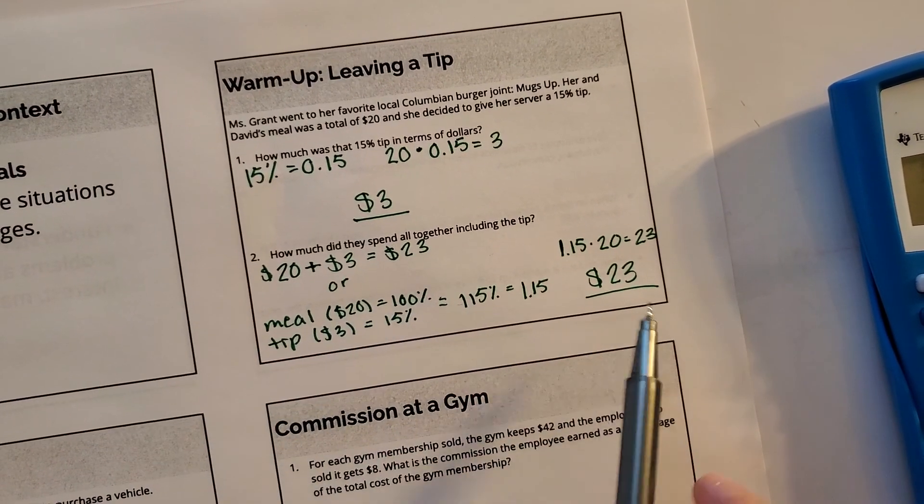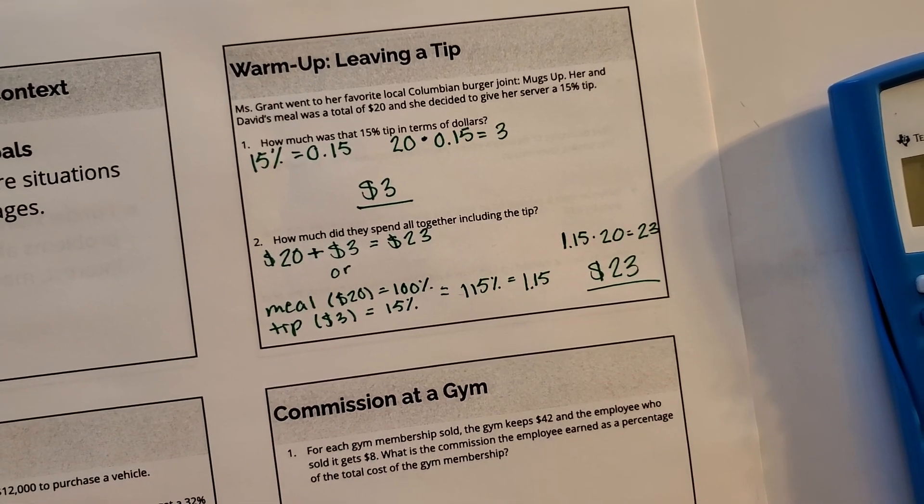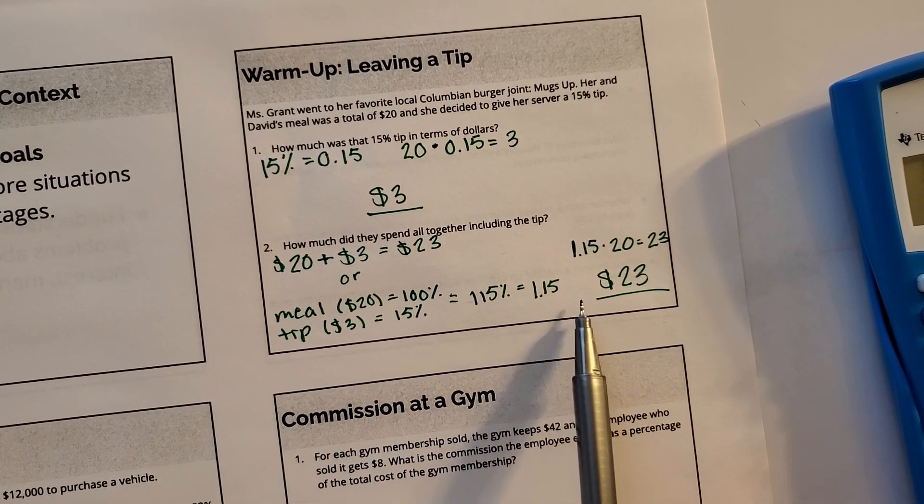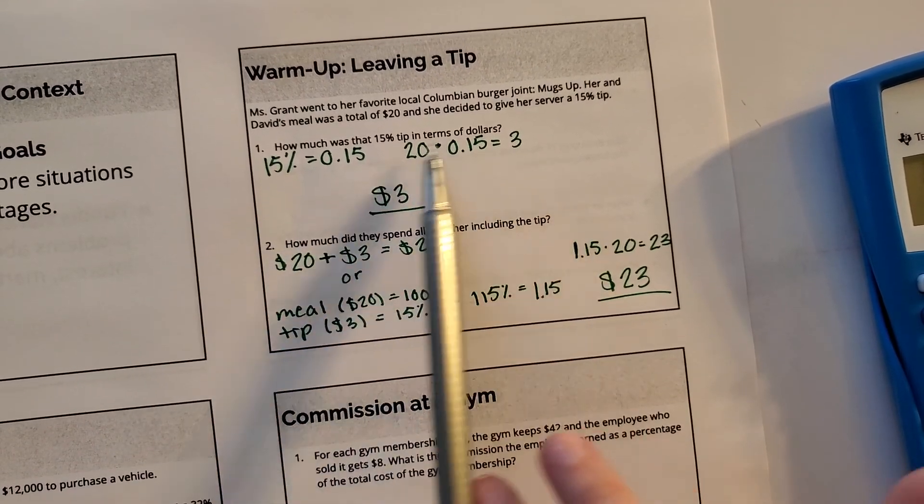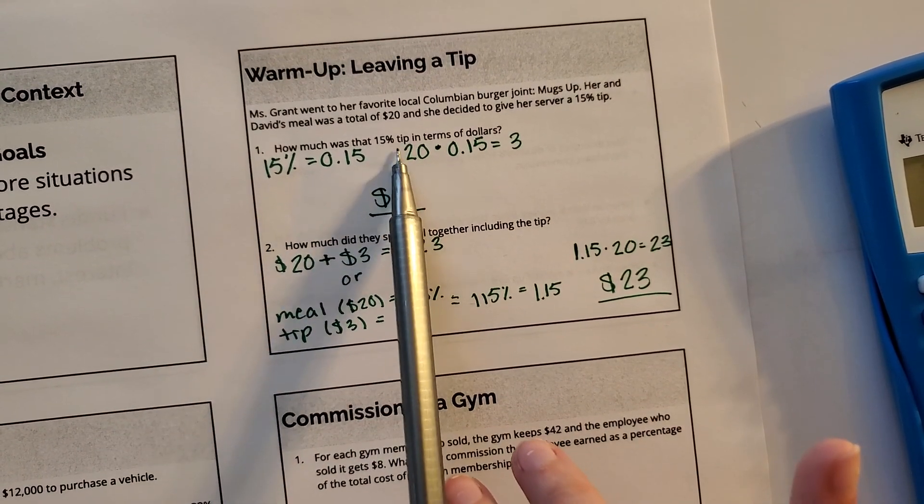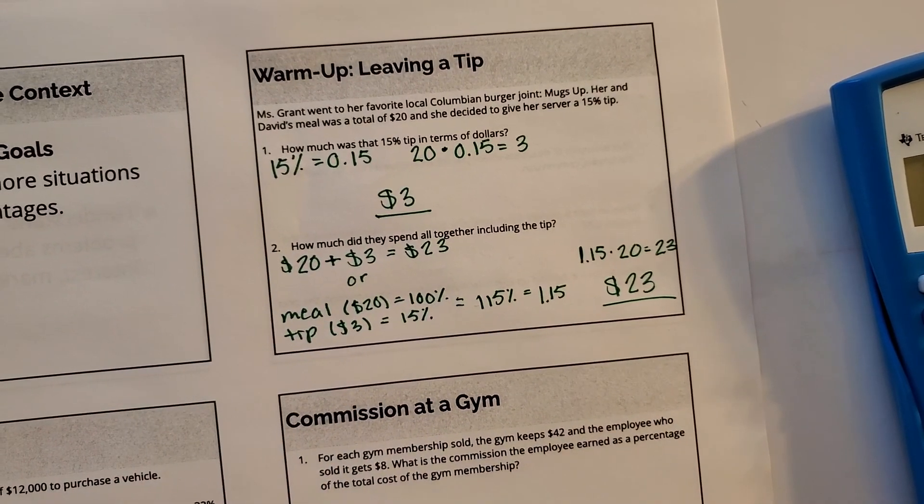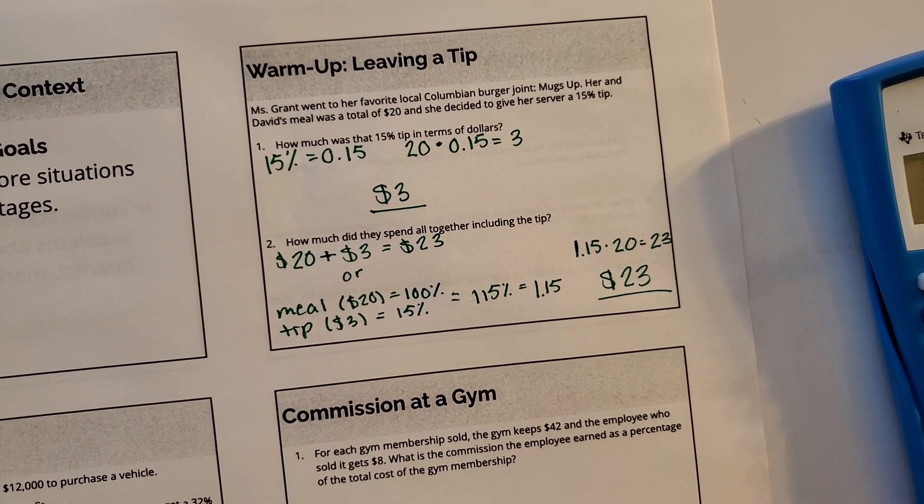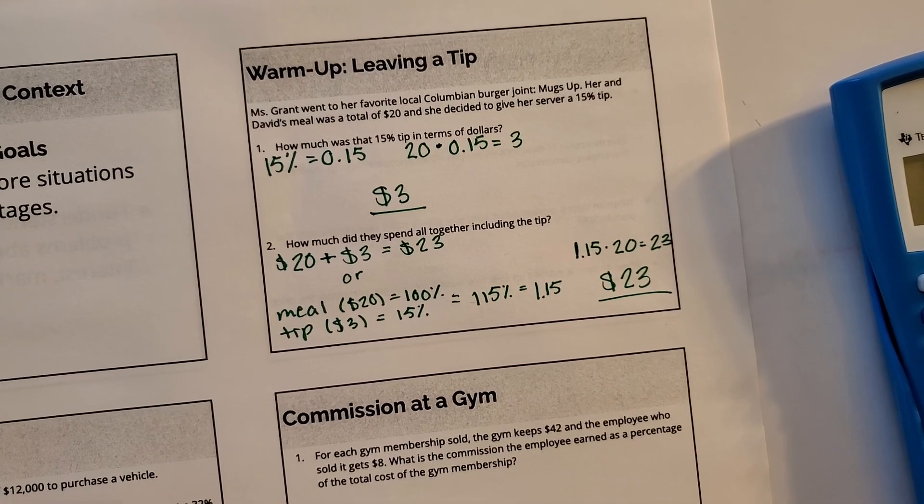So that is the same answer that we got, just different ways of solving it. This way is going to come in handy if they don't ever make you find that original 15%. If they just say how much did we spend all together if we gave them a 15% tip, that way might be a little bit easier.